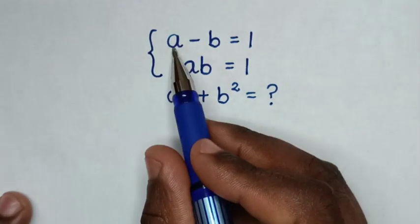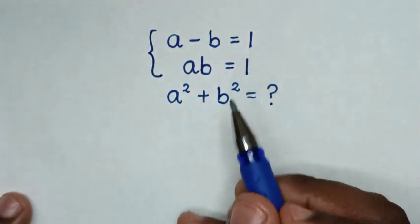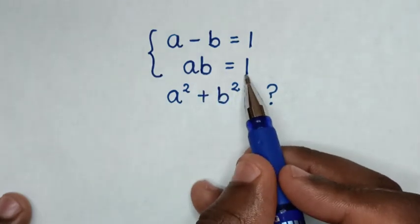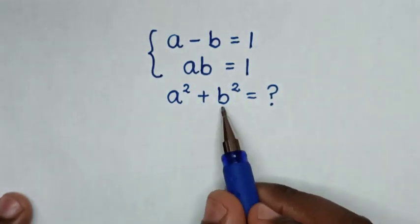Hello, how to solve A minus B is equal to 1, AB is equal to 1, find the value of A square plus B square.